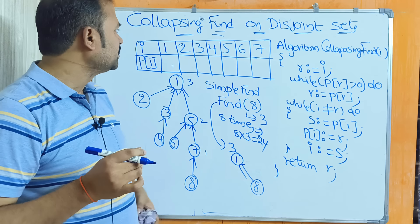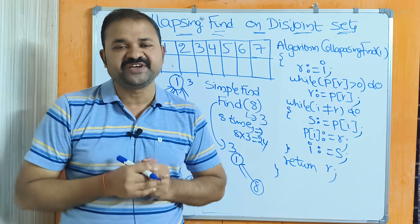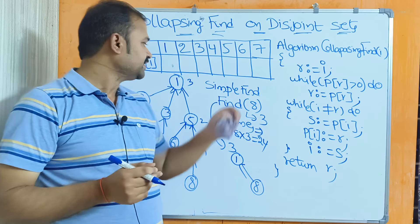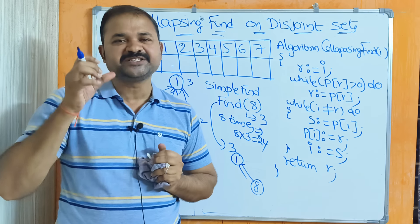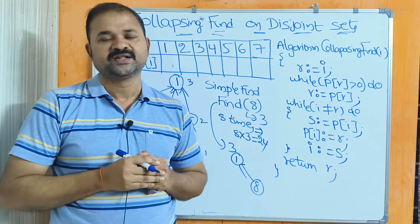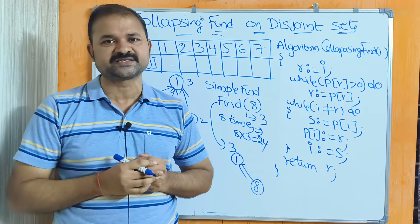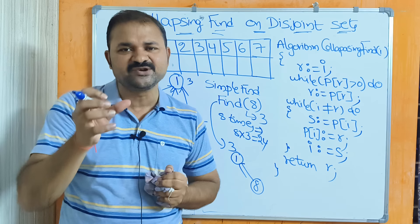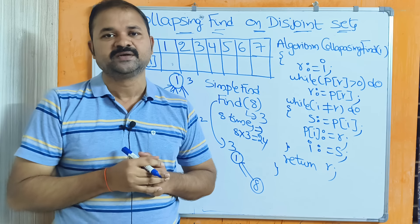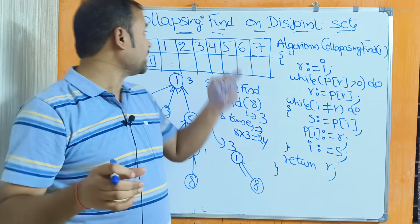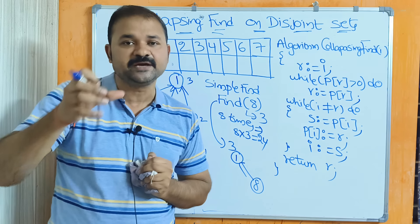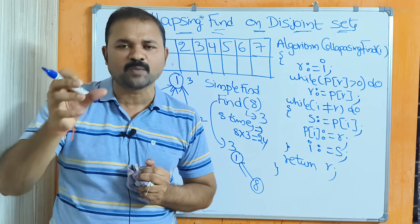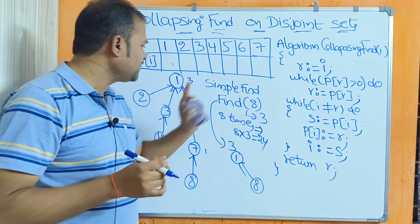Let us discuss the collapsing find operation which we can perform on disjoint sets. We have already seen the simple find operation. The major problem with simple find is it takes more comparisons. With collapsing find, we can reduce the number of comparisons and improve the efficiency of the search process.